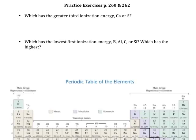These are practice exercises from pages 260 and 262 in the textbook, and this time we're talking about ionization energies. This first question asks us which of these has the greater third ionization energy: calcium or sulfur. A third ionization energy is the energy required to remove a third electron.